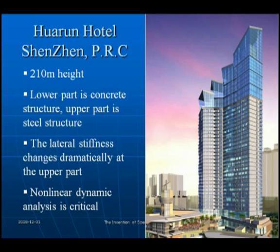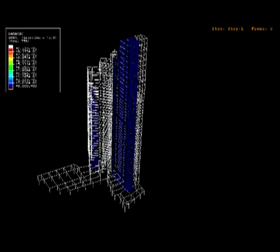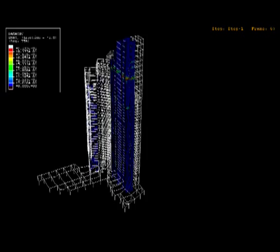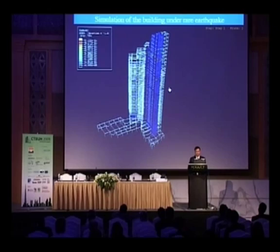The Huayang Hotel is 210 meters high. The lower part is a concrete structure and the upper part is a steel structure. The lateral stiffness changes dramatically at the transition, so non-linear dynamic analysis is critical for this building. The simulation shows the building's response under a real earthquake.